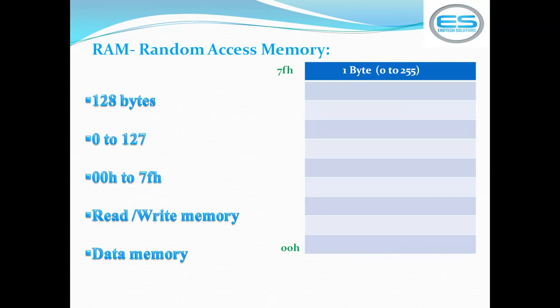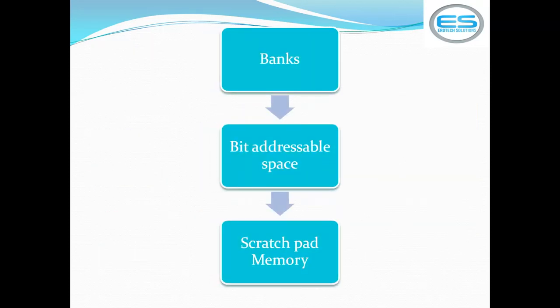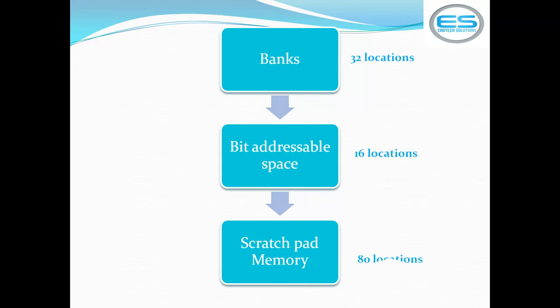This RAM memory is distributed into different sections: banks, bit-addressable space, and scratch pad memory. These 128 locations are divided into three individual sections. Banks occupy 32 locations, bit-addressable space is 16 locations, and scratch pad memory is the remaining 80 locations out of 128.